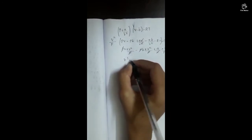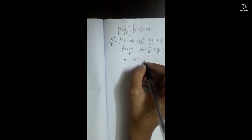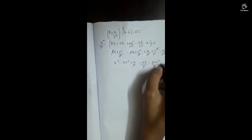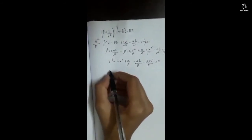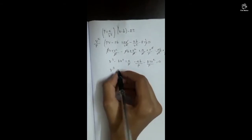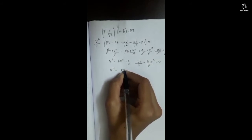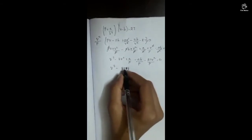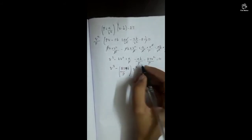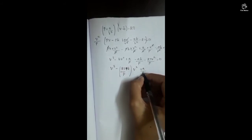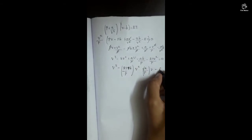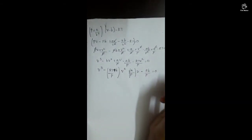After cancelling and simplifying, we obtain the cubic equation in v: v³ - (b + RT/p)v² + (a/p)v - ab/p = 0. The v³ term, the v² term with coefficient -(b + RT/p), the v term with coefficient a/p, and the constant term -ab/p are identified.